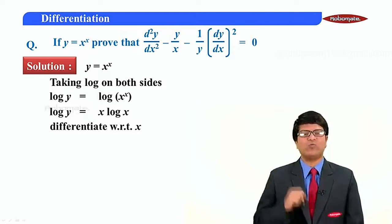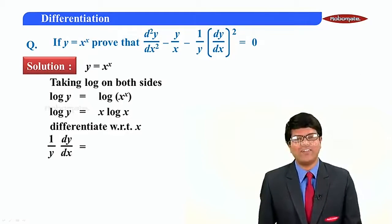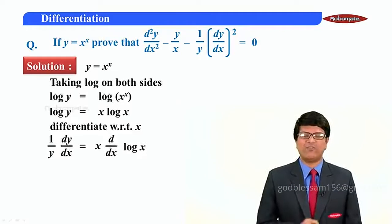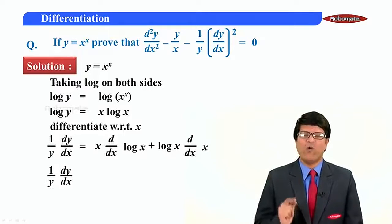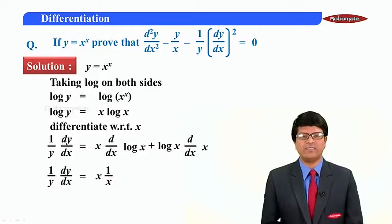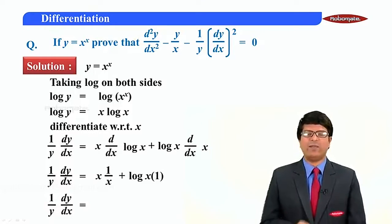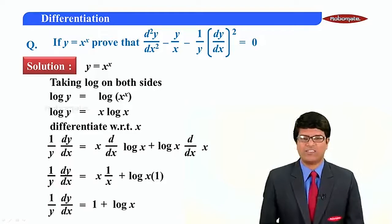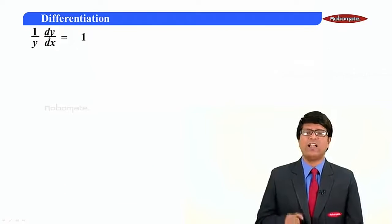Derivative of log y is (1/y)(dy/dx). On the right hand side, we use the product rule: x·(d/dx)(log x) + log x·(d/dx)(x). So (1/y)(dy/dx) equals x·(1/x) plus log x·1, which gives 1 plus log x. Therefore (1/y)(dy/dx) is 1 plus log x.